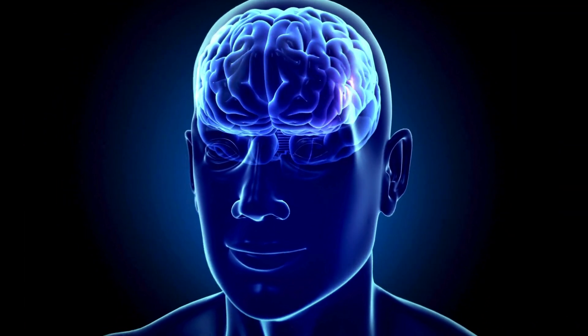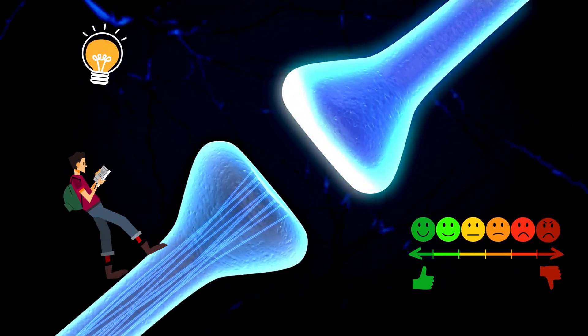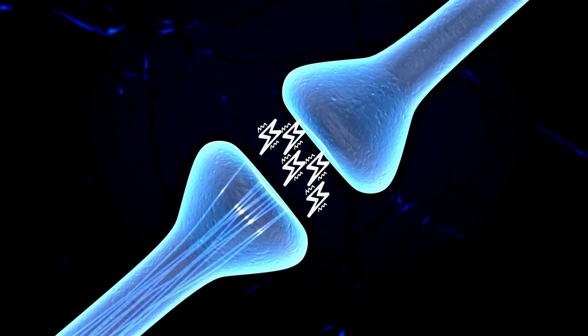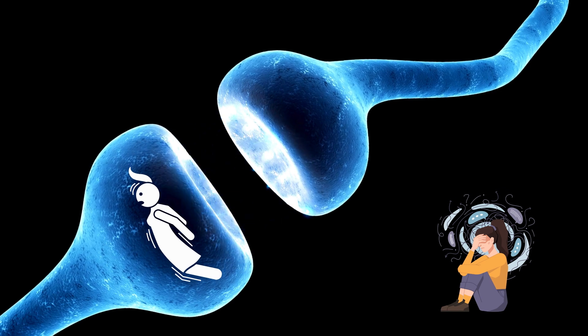In your brain, there are tiny cells called neurons that communicate with each other to make everything work properly, like thinking, feeling, and moving. When these neurons get too excited, it can lead to anxiety, stress, or even seizures.